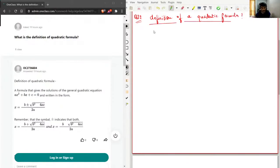So let's say we have a quadratic equation, and that equation will be ax square plus bx plus c equal to zero.